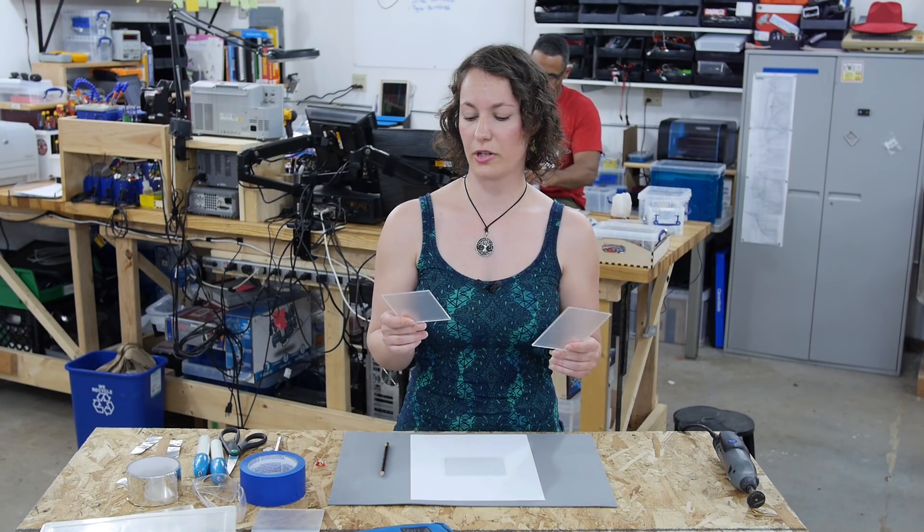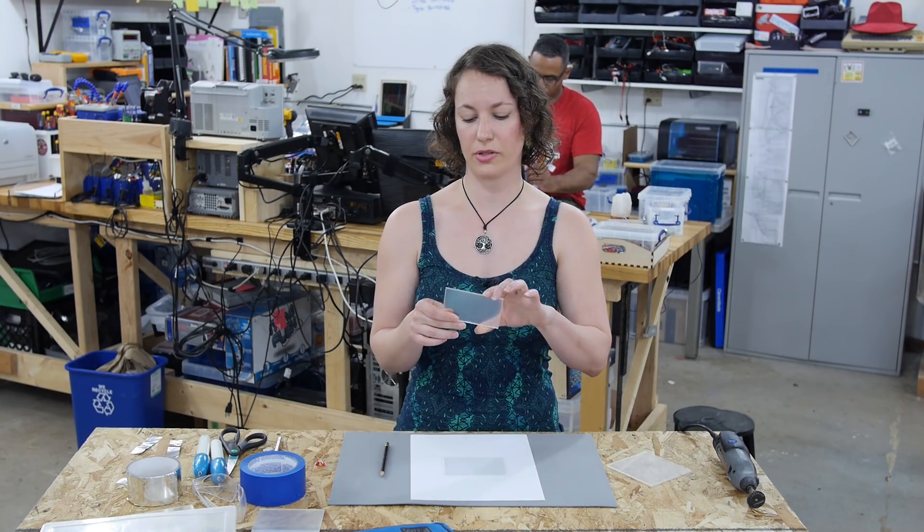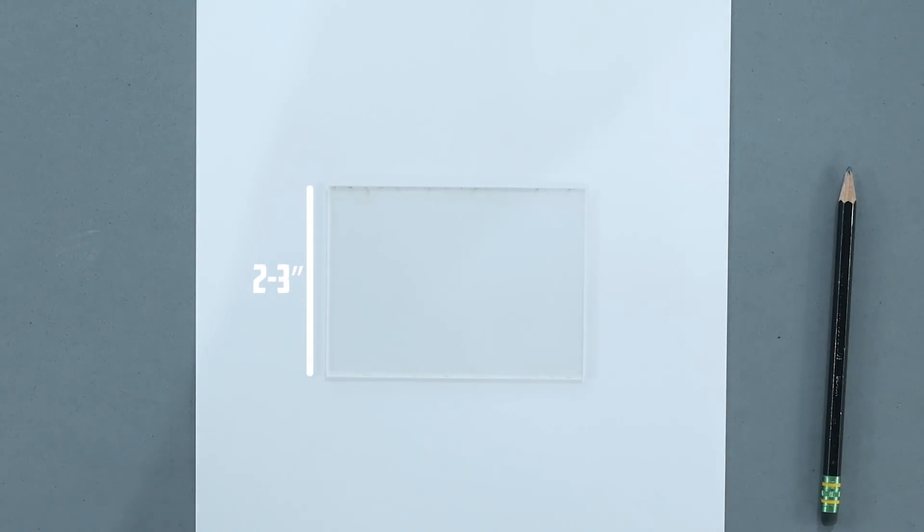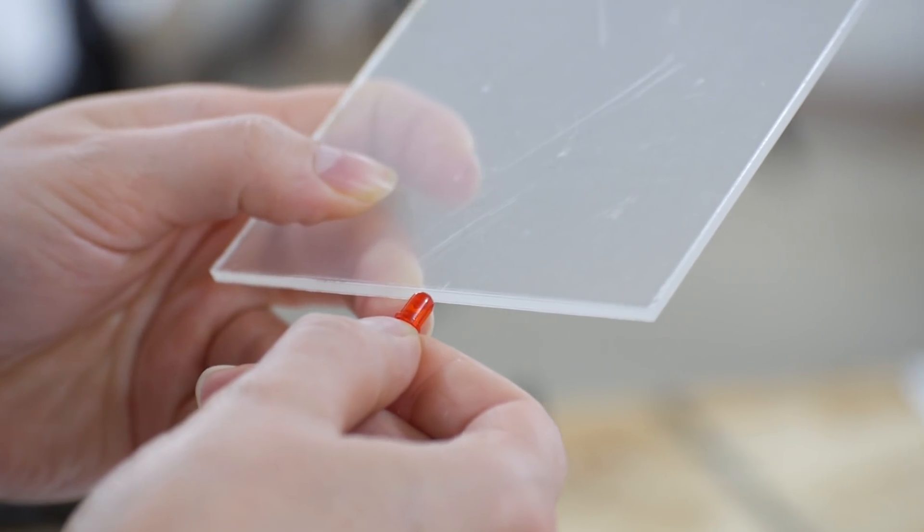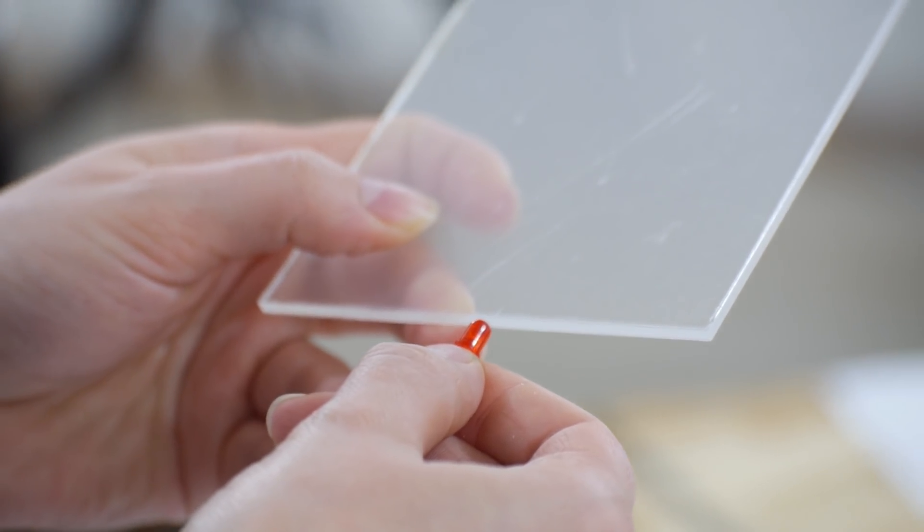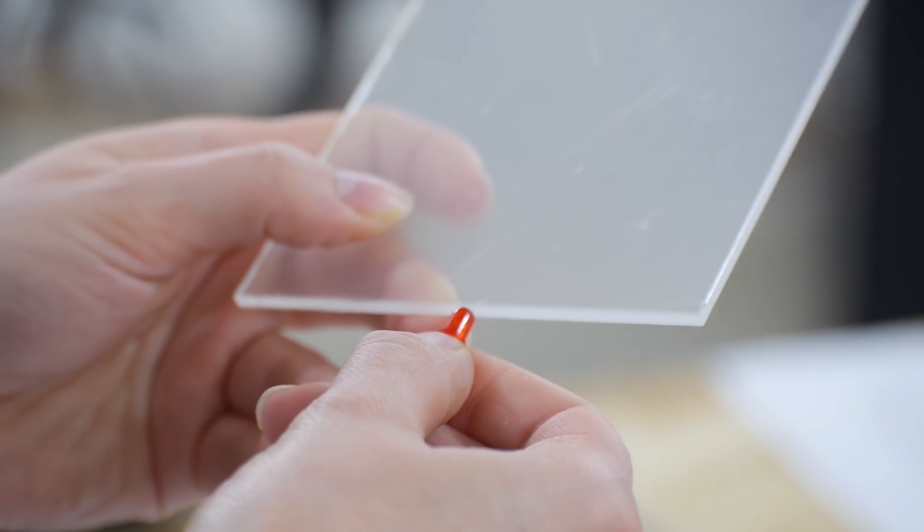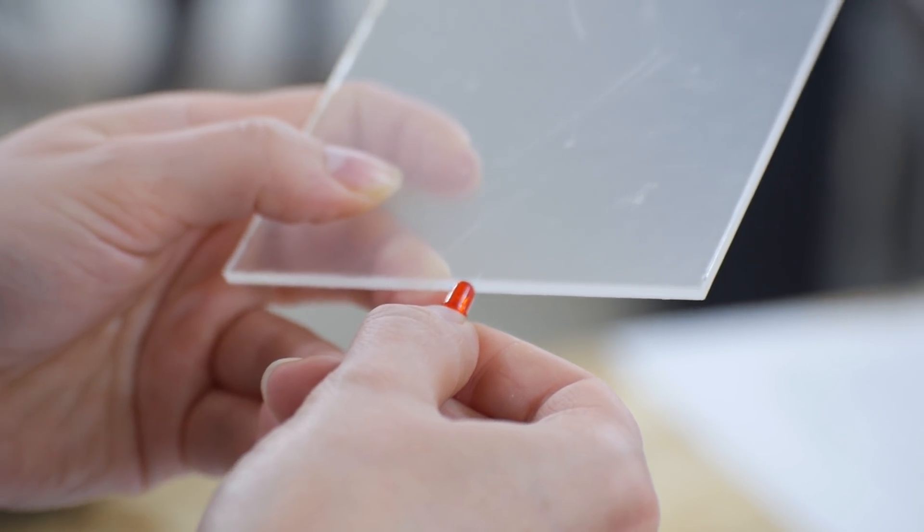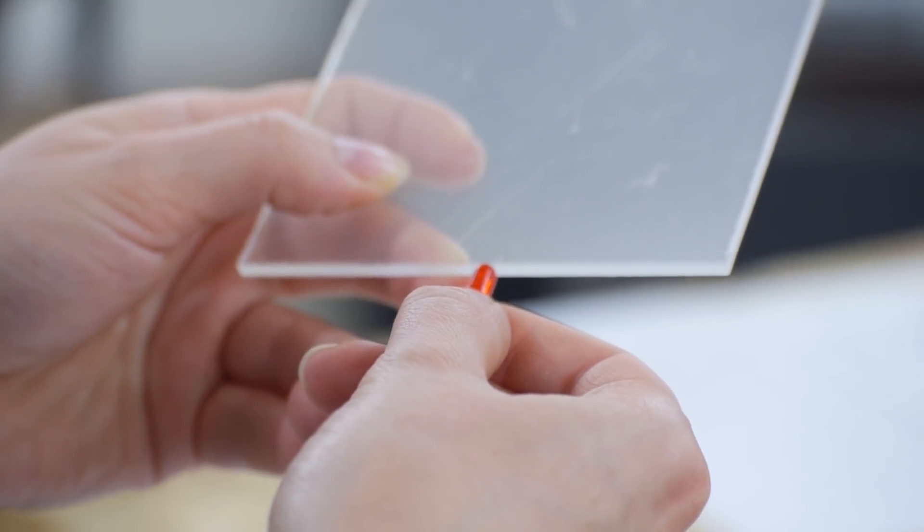When deciding the size of your acrylic you want to stick around two to three inches in either rectangular or square. If you go too big the light of your LED won't reach your design and it won't light up very well. So for this particular application if you're only using one LED then you want a smaller design.